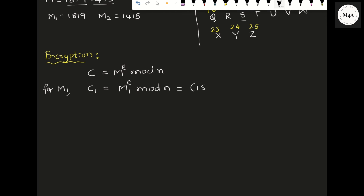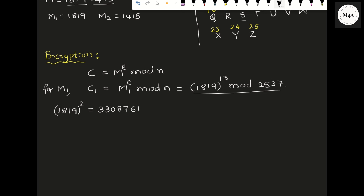C1 = 1819^13 mod 2537. We start with the least power. 1819^2 = 3,308,761. Dividing by 2537, you get a remainder of 513. So 1819^2 ≡ 513 mod 2537. I want you to verify this calculation. Now, I will multiply the square by 6 to get 1819^12.